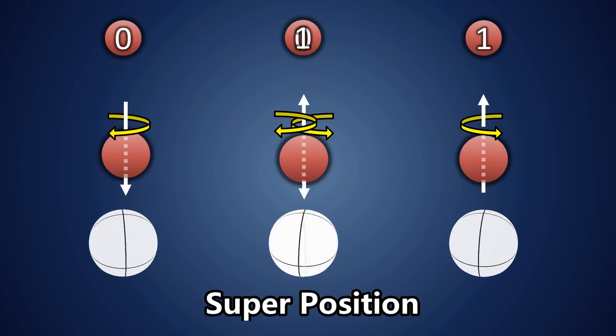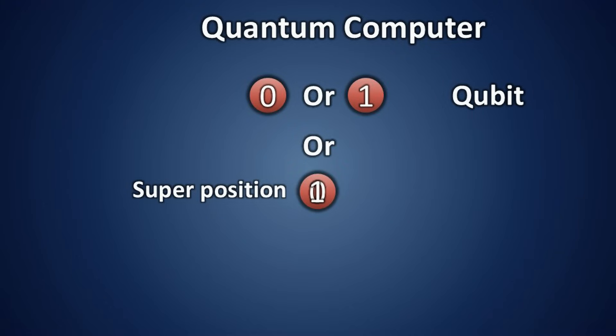This unique state is known as superposition. Similarly, qubits can exist in three types of states: the zero state, the one state, and a superposition state of zero and one.